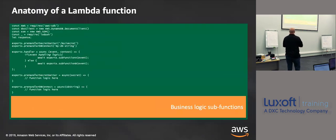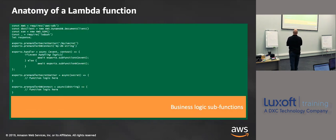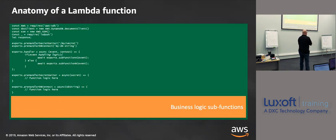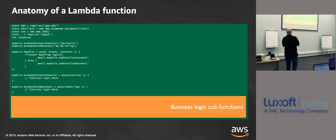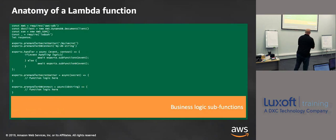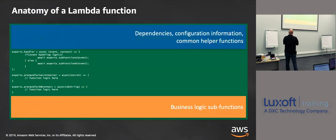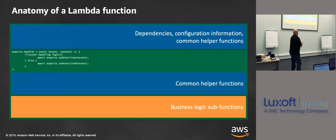As we start to add, now we've got some pre-handler functions. For instance, we're keeping our secrets outside of our handler — keeping it in a secure place. We're talking about the anatomy of Lambda in more depth. We're also going to handle some database connections — we were talking about SQL earlier. We're putting out things like dependencies, configuration information, common helper functions, things like that.